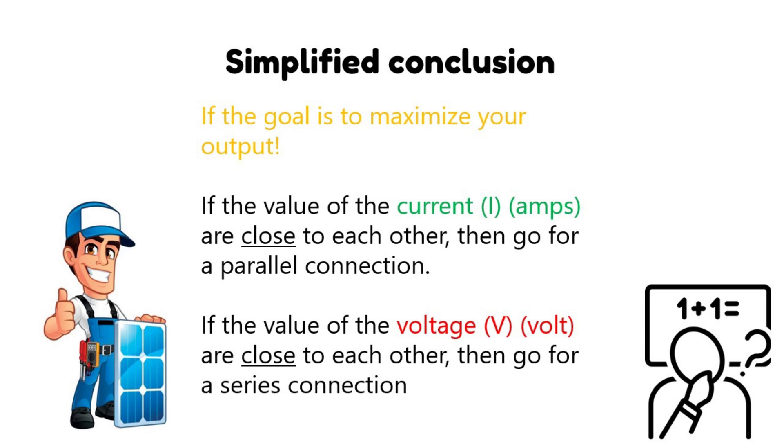So a simplified conclusion: if the goal with your system is to maximize your output, and if the value of your current or amps, amperage are very close to each other, then go for a parallel connection. And if the value of the voltage, the volts are close to each other, then go for a series connection.